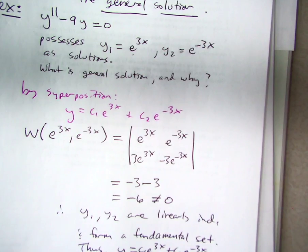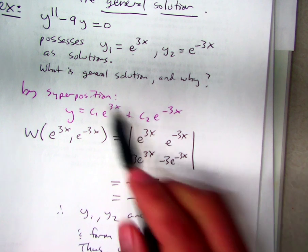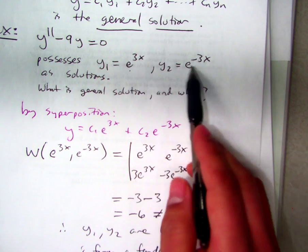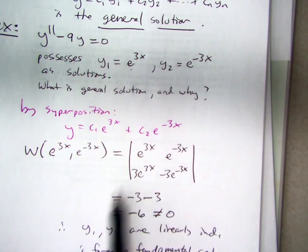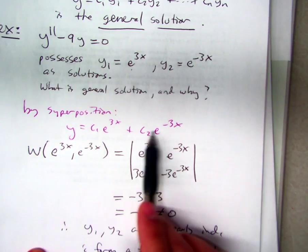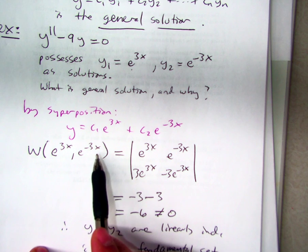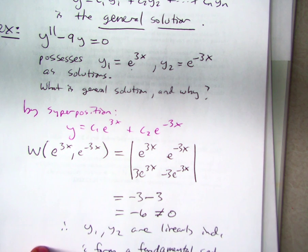Then we don't have a linearly independent set. So even though, good question. So even though these might be solutions to the Diffie Q, and even though when you use the superposition principle, this would be a solution, it's not the general one. It would just be another one that also happens to work.